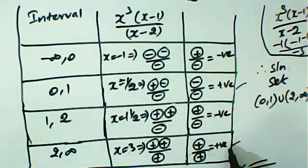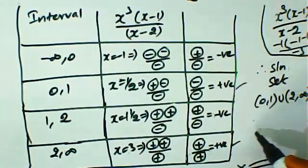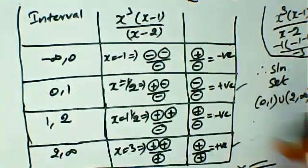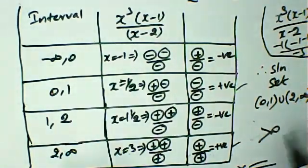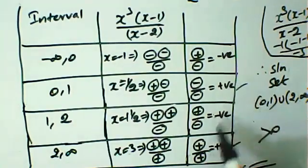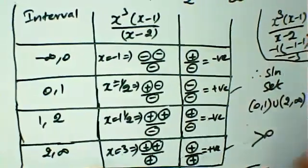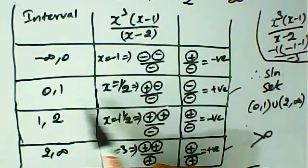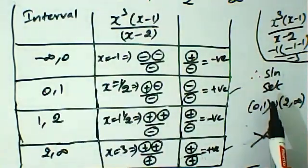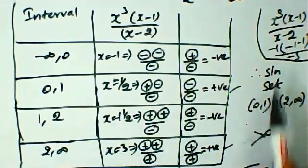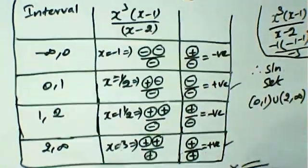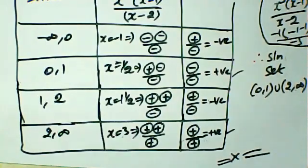Since the expression must be greater than 0, we choose the intervals where the sign is positive. The solution set equals the union of the intervals where the expression is positive: (0, 1) union (2, infinity). This is the solution set. Thank you.